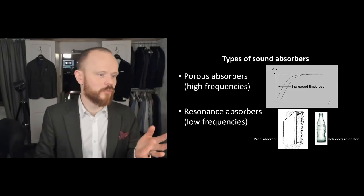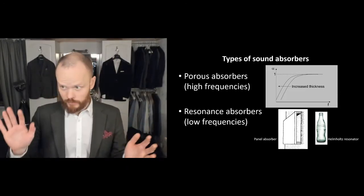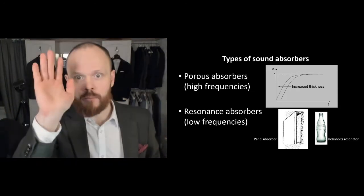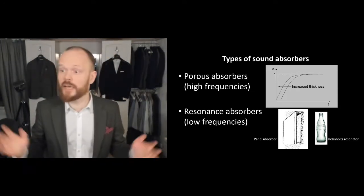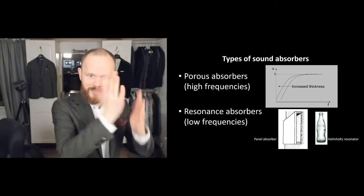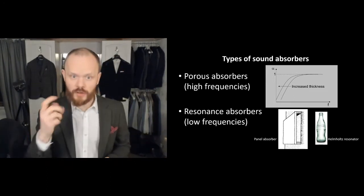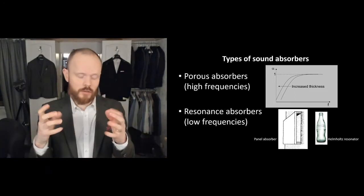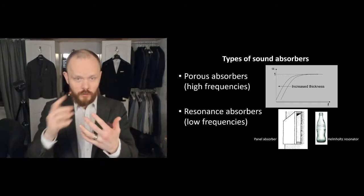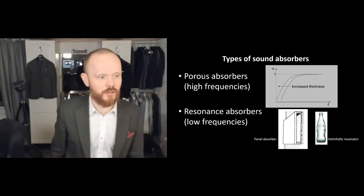If you imagine a panel absorber where you have an air volume encapsulated behind a wooden plate, for instance, if you go there and thump your hand against it — like a lightweight wall — you're going to hear a bass thump. And that's the resonance frequency of this wall construction. That construction will serve as an absorber around those frequencies that you hear when you bang on it.